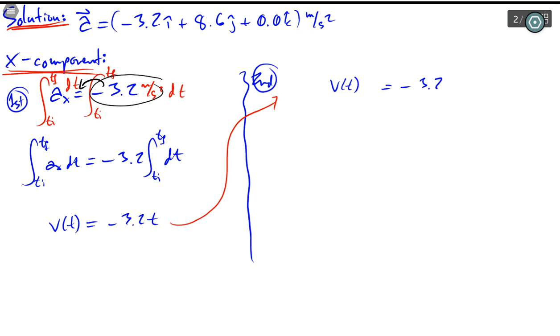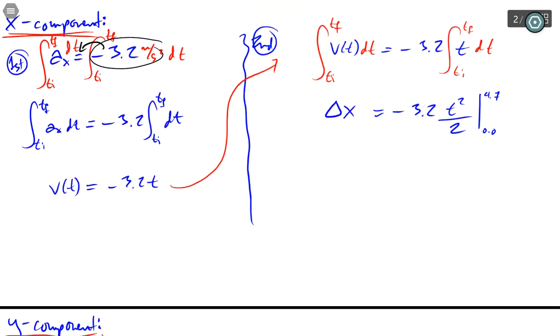I'm giving myself some space. Then I have to integrate one more time. I don't need to include the 3.2 anymore. This is still from ti to tf. On the left side, this equals delta x because this is the x component. The 3.2 stays, but now the integral becomes evaluated from 4.7 to 0.0. The 0.0 won't do squat, but when you plug in the boundaries, that becomes 0.